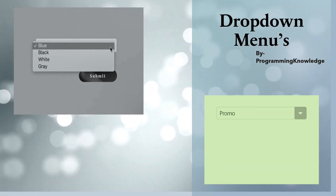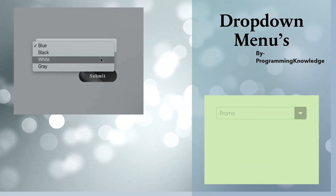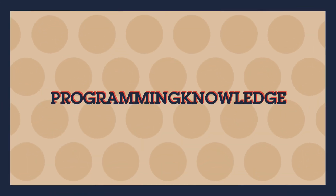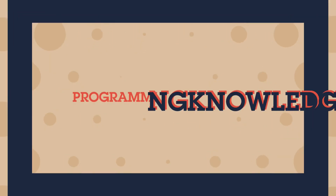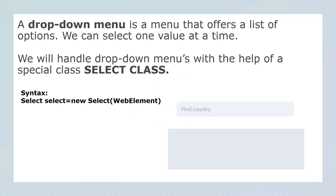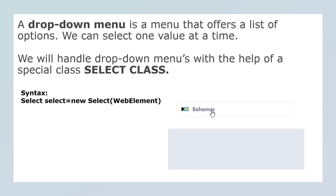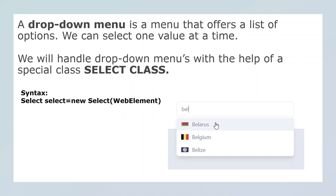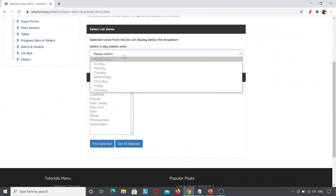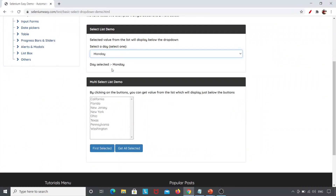Hello everyone, this is Varsha and welcome to Programming Knowledge. Today we are going to learn about dropdown menus. A dropdown menu is a menu that offers a list of options and we can select one value at a time. Here you can see this is the dropdown menu — I can select any one value at a time. So this is called a dropdown menu.